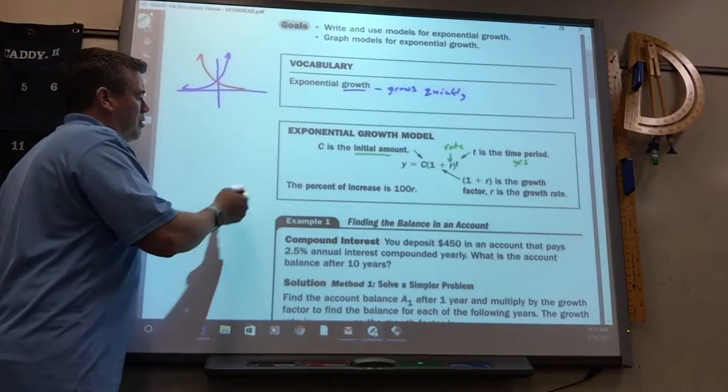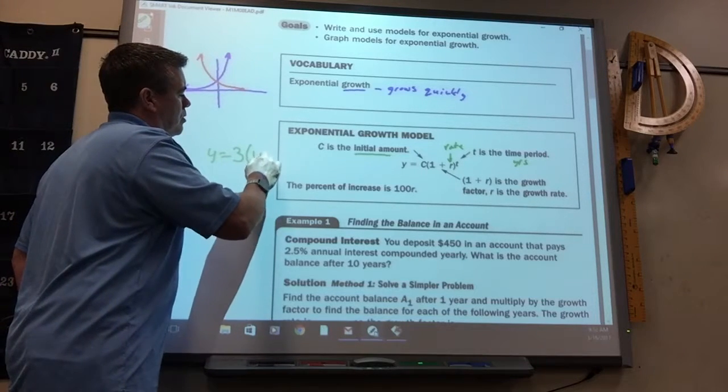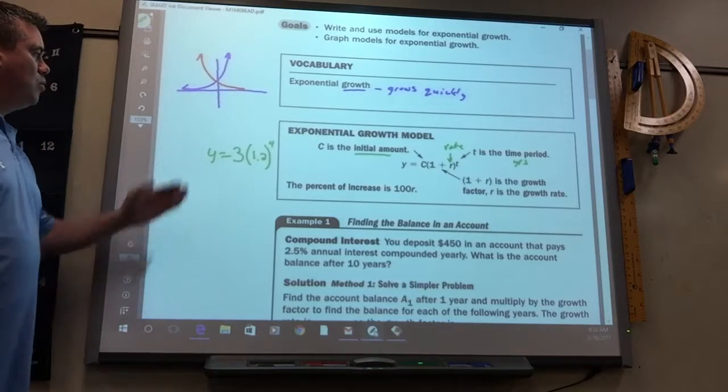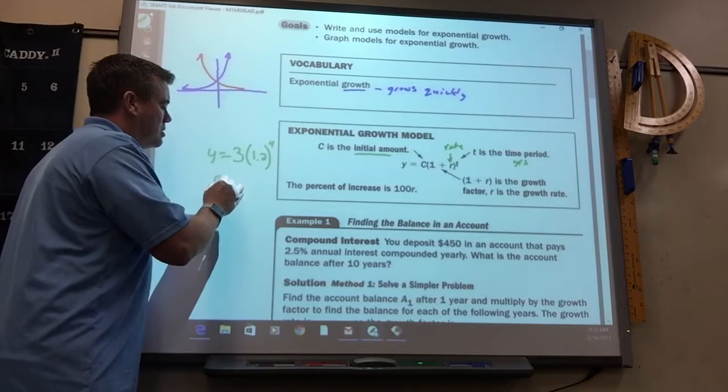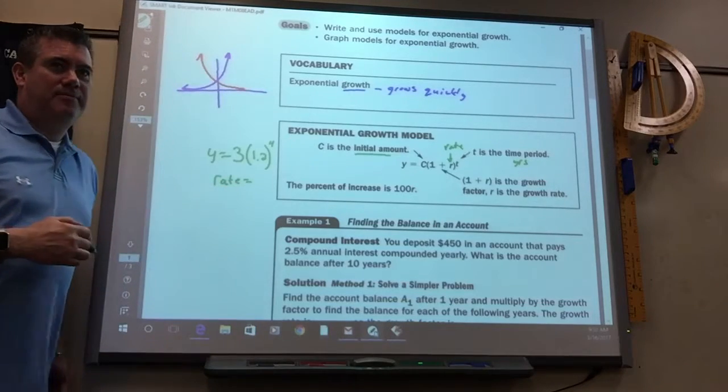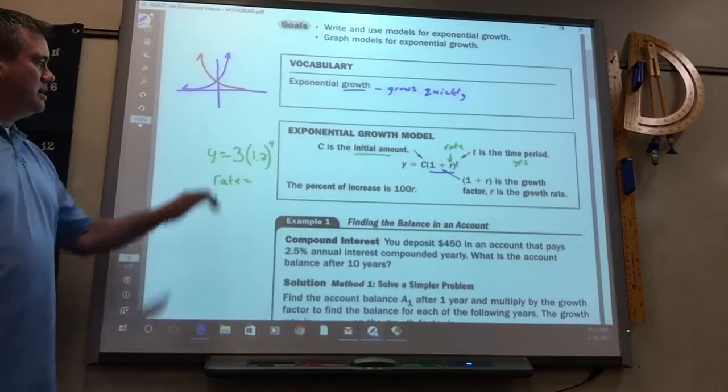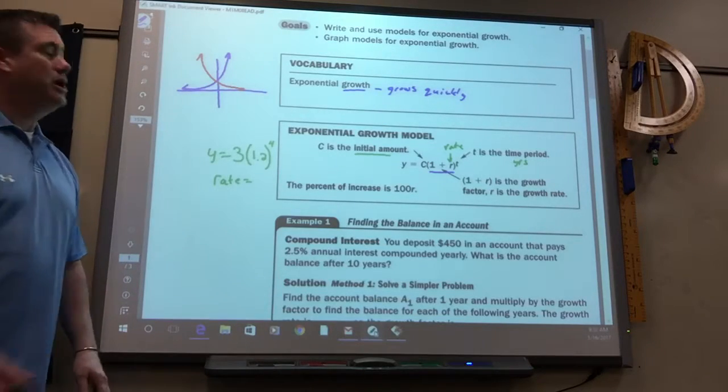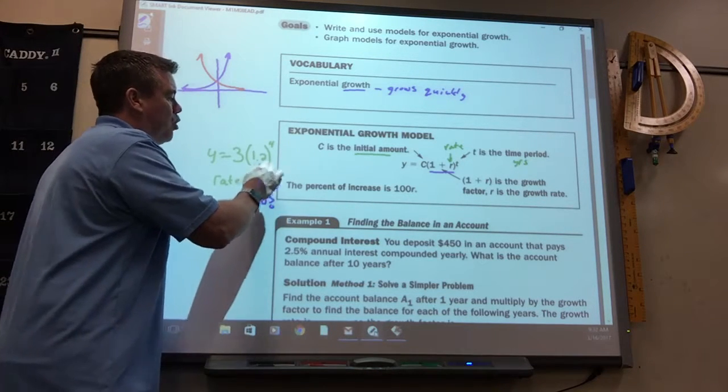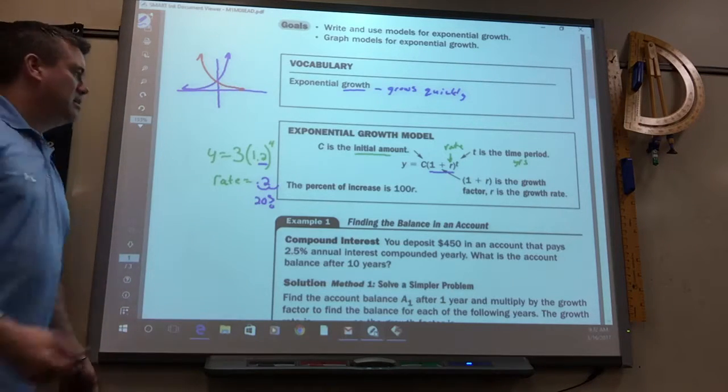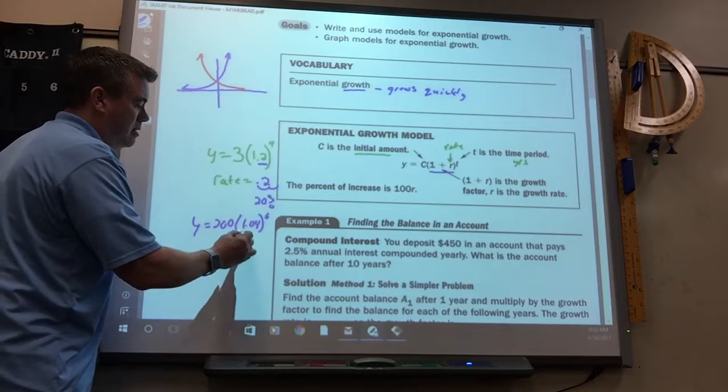The only difference when we do decay next is this will be 1 minus the rate. So an example of a growth problem would be Y equals 3 times 1.2 to the fourth. If they asked you what the rate was, remember in the parentheses that's 1 plus the rate. So what would that be for a rate? 0.2. Which is what as a percent? 20%. So whatever it's over the one, that's the rate.